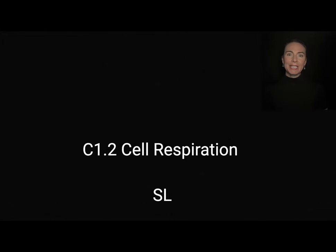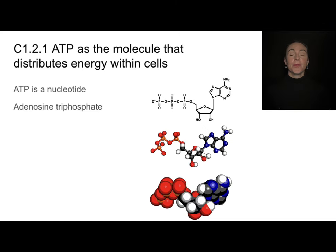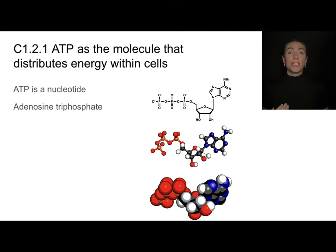In this video, we'll take a look at the standard level content from C1.2 on cell respiration. The goal of cell respiration is to produce something called ATP — that is adenosine triphosphate.